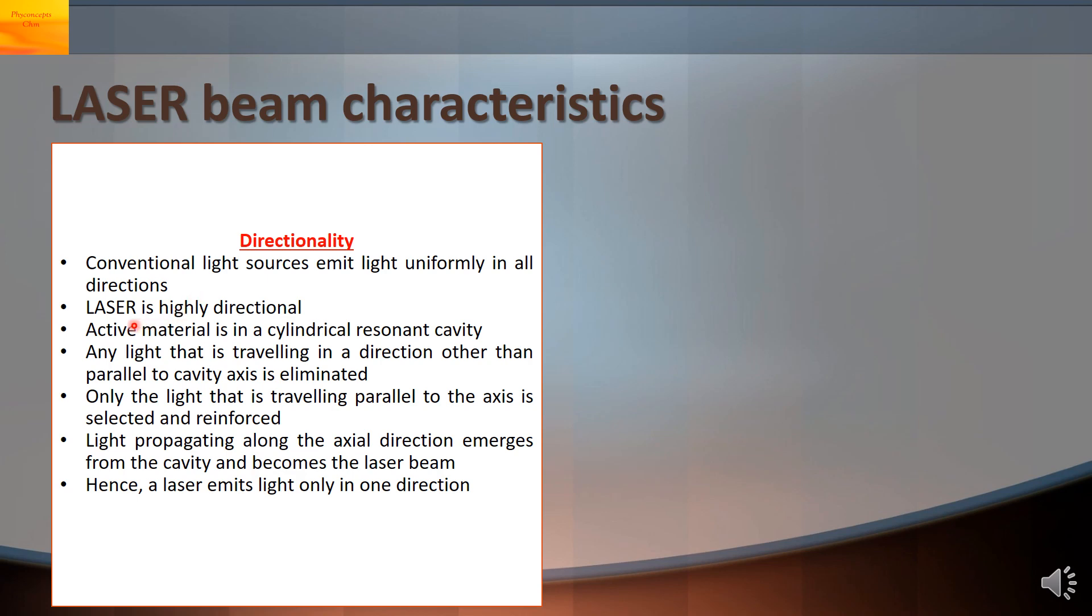The light that comes from a laser is highly directional. The active material is in a cylindrical resonant cavity. Any light travelling in a direction other than parallel to the cavity axis is eliminated. Only the light travelling parallel to the axis is selected and reinforced which will be suffering many multiple reflections. The light propagating along the axial direction emerges from the cavity and becomes a laser beam. The laser emits light only in one direction.